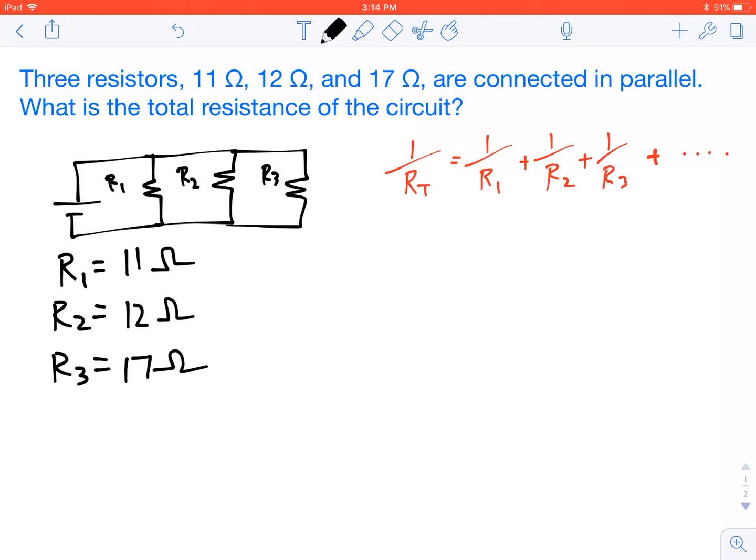The equation for adding up resistors in parallel looks like this: 1/RT = 1/R1 + 1/R2 + 1/R3 for however many resistors you have.